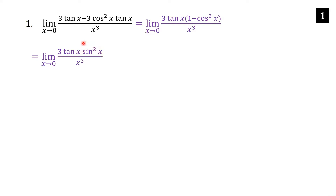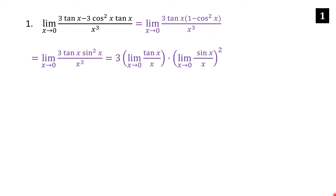Now split this limit into pieces. Pull the 3 out front, then think of this as tan x over x and sin²x over x², using the limit product rule. This gives the limit of tan x over x times the limit of (sin x / x) all squared.